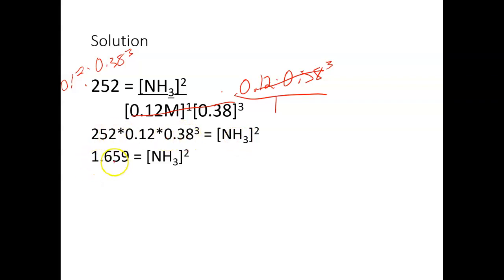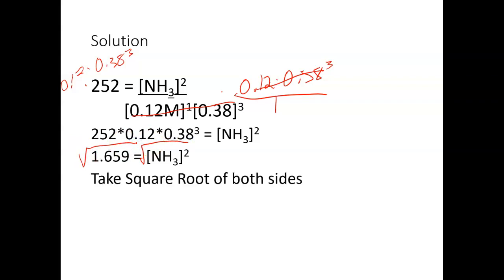So doing the math, I get 1.659 is equal to ammonia squared. Don't forget that to get rid of a square, we need to take the square root of each side. So taking the square root of each side, I get around 1.288 or around 1.3 molar for my ammonia at equilibrium.